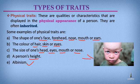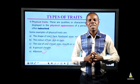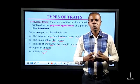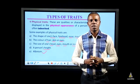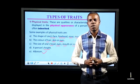This is a typical image of an albino. This is a disorder where there is little or no color on the hair, eyes, and skin. The next type of traits we will be looking at is behavioral traits.